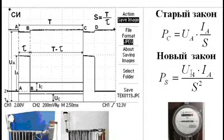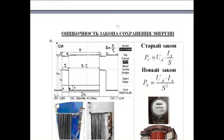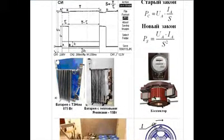So, let's divide it by the duty cycle. Now the average power is defined as the product of the amplitude values of voltage and current, divided by the square of the duty cycle. Is this a lot or a little? It turns out that all electricity meters are built — I apologize to academics — built on a moronic academic formula that protects the law of conservation of energy, and according to this formula, all meters in all countries are built.